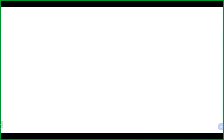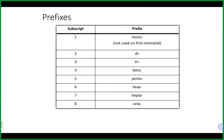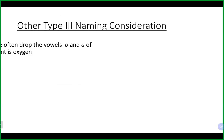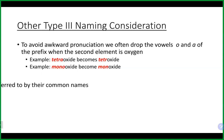Let's look at the prefix table. The key rule: 'mono' on the second but not on the first. We typically drop the 'a' or 'o' from the prefix when it backs up to another vowel — so 'tetra oxide' drops the 'a' and becomes 'tetroxide,' and 'mono oxide' drops the 'o' and becomes 'monoxide.' Two i's are typically left alone.